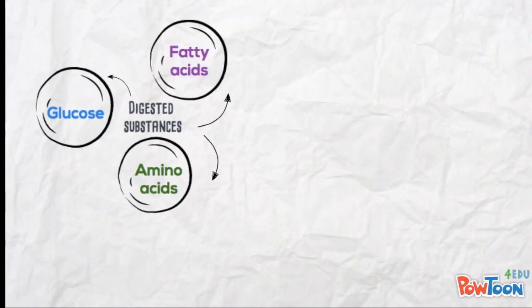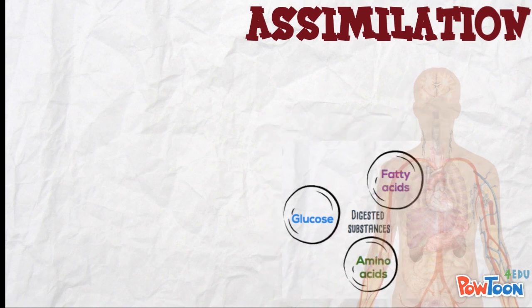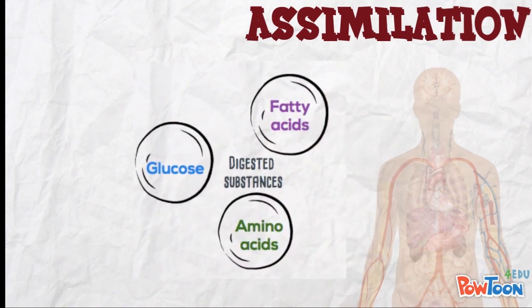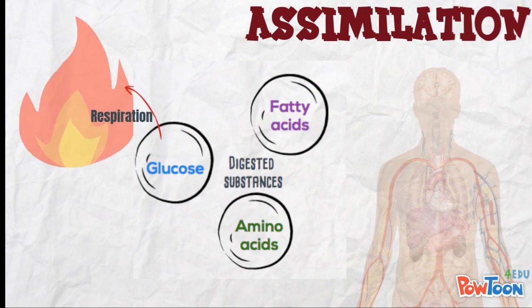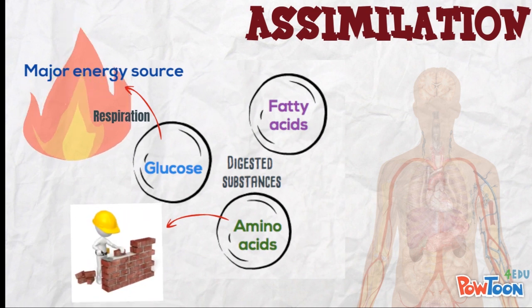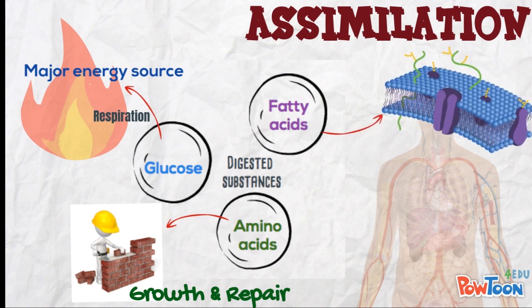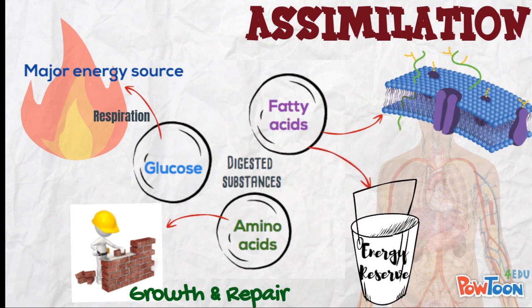After absorption comes assimilation, where the digested and absorbed substances are used by the whole body. They are transported from the small intestine to all parts of the body by blood circulation. Glucose is the major energy source, metabolized through respiration for daily activities. Amino acids are the basic building blocks of our body — cells and muscles are largely made up of amino acids, responsible for growth and repair. Fatty acids are a major component of the cell membrane, including the phospholipid bilayer, and also act as the body's energy reserve.